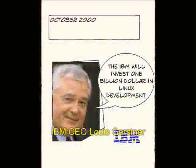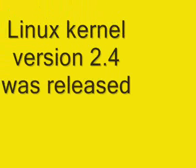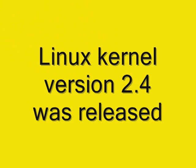October 2000: IBM CEO Louis Gerstner announces that the company will invest $1 billion in Linux development. January 2001: Linux kernel version 2.4 was released.